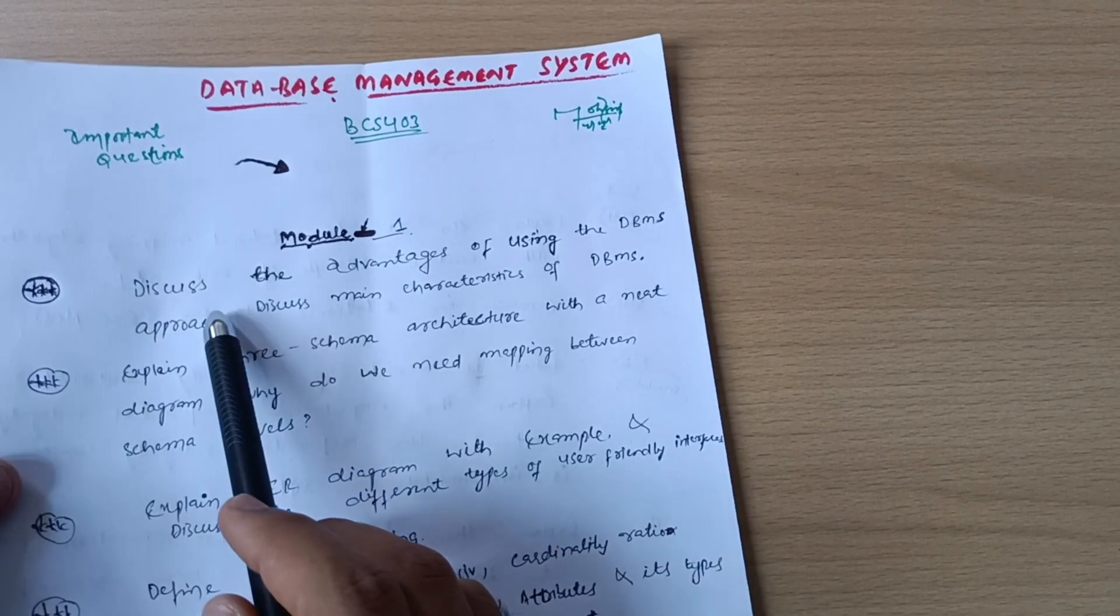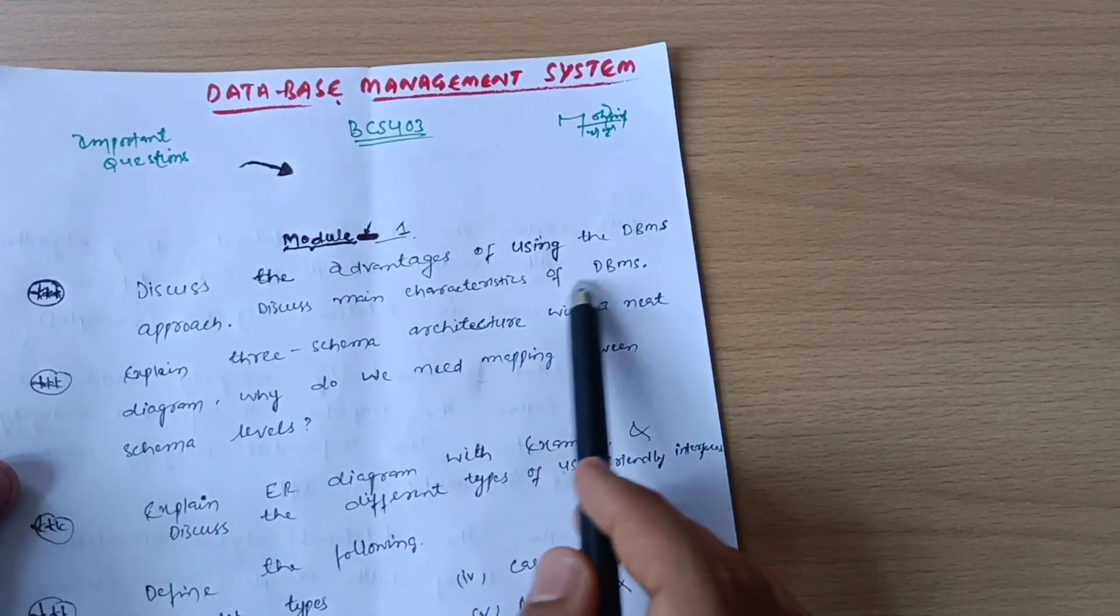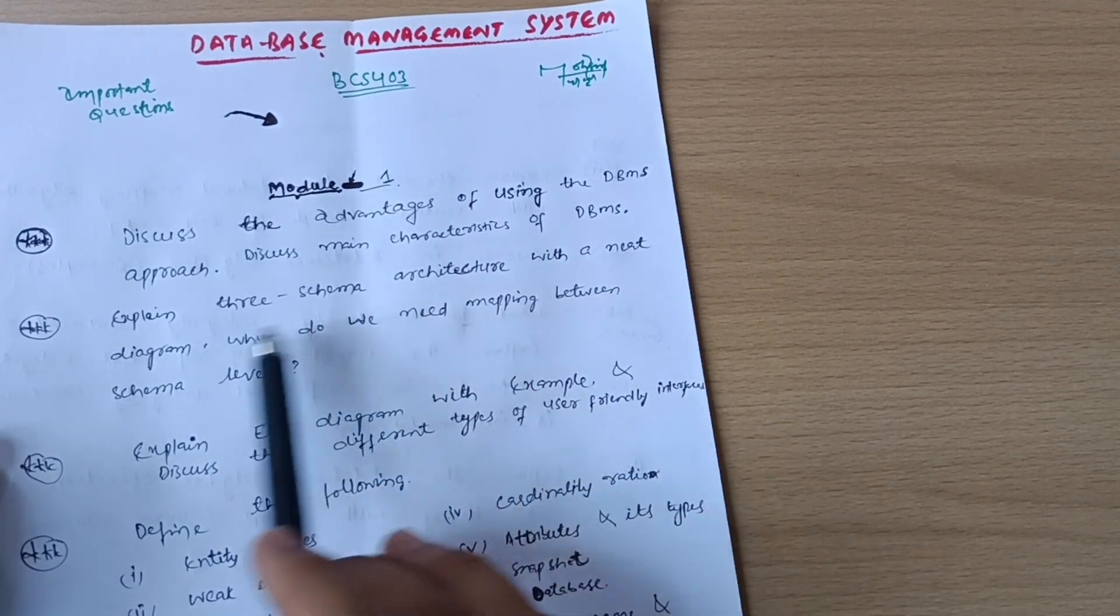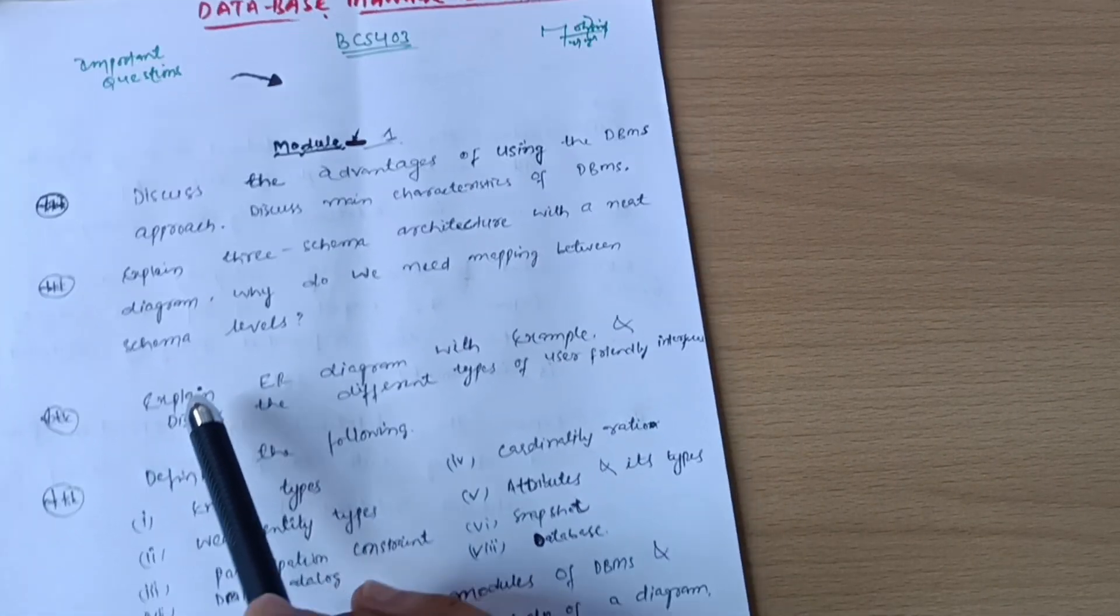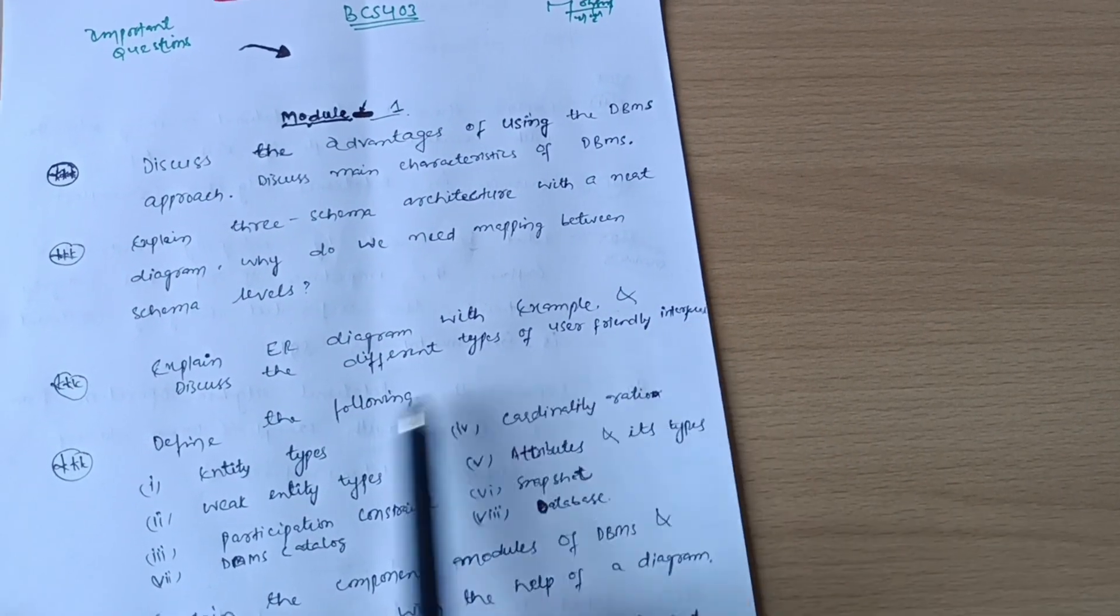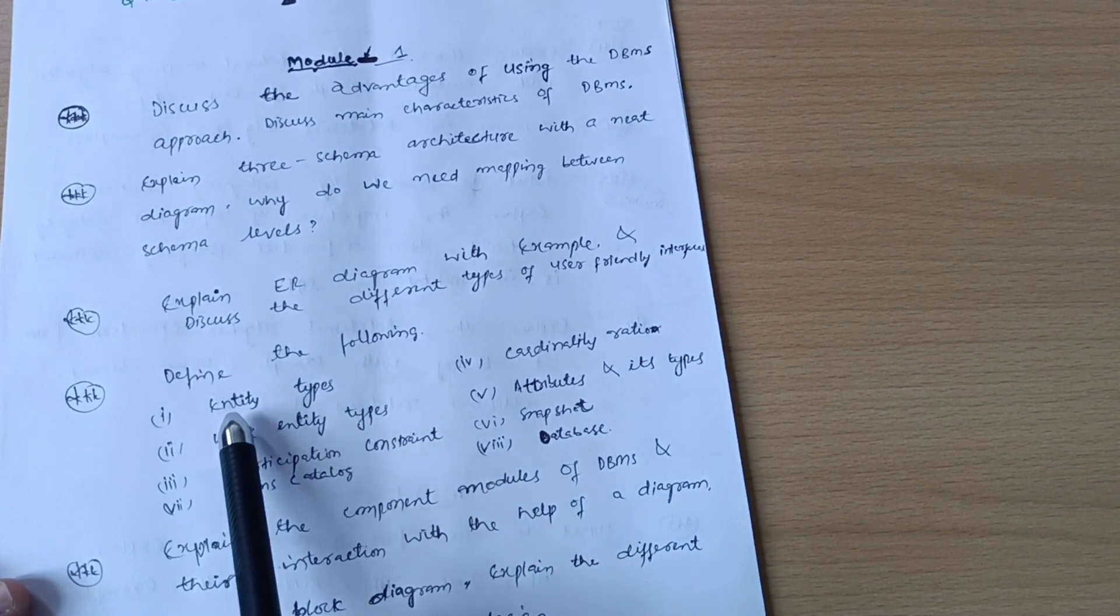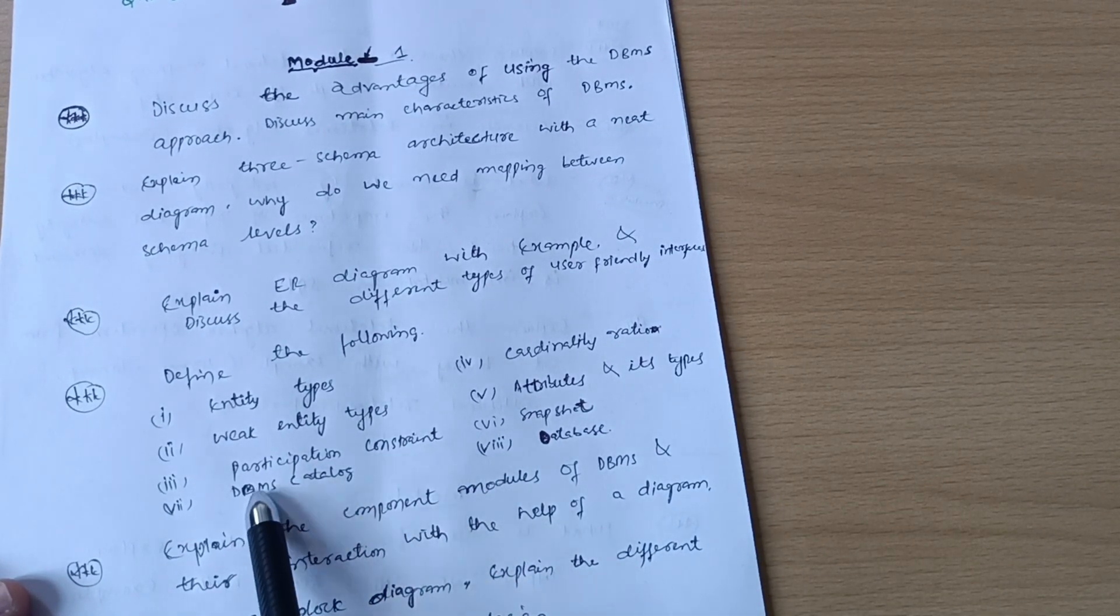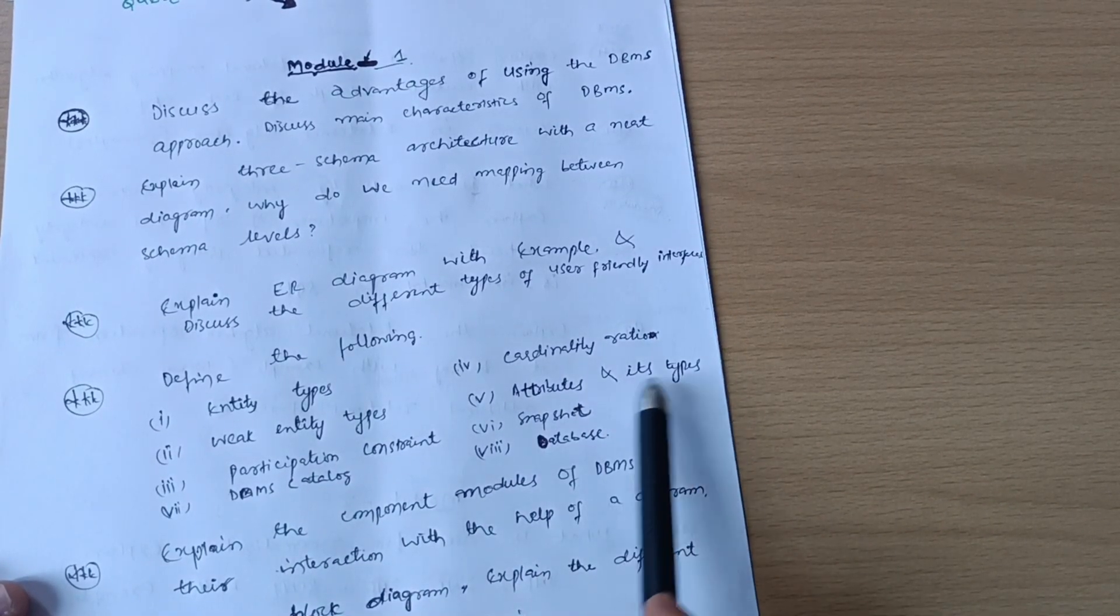Model 1: Discuss advantages of using the DBMS approach. Discuss main characteristics of DBMS. Explain three schema architecture with a neat diagram. Why do we need mapping between schema levels? Explain ER diagram with example and discuss different types of user-friendly interfaces. Define the following: entity types, weak entity types, participation constraint, DBMS catalog, cardinality ratio, attributes and its types, snapshot and database.